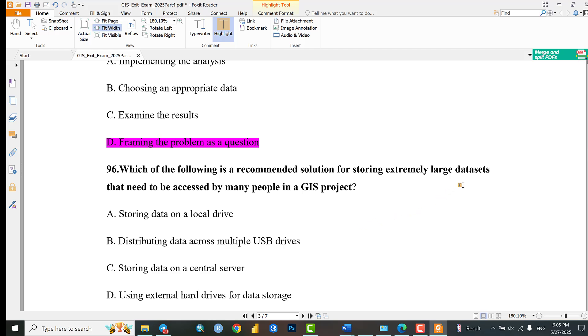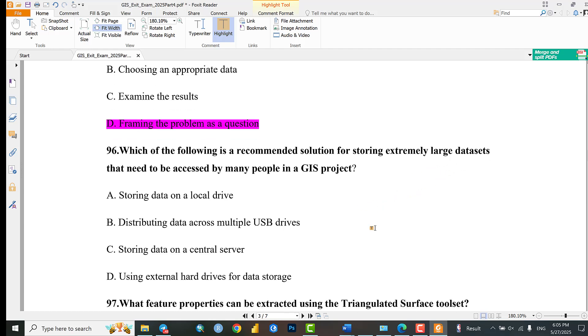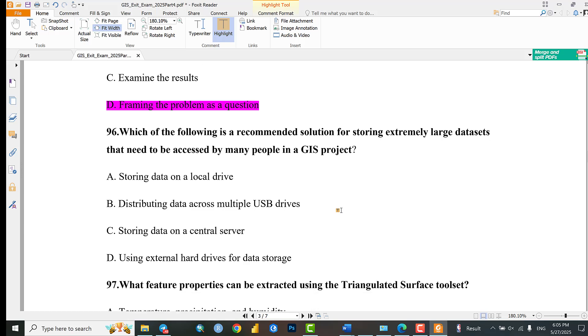Question 96: Which of the following is a common solution for storing extremely large datasets that need to be accessed by many people in a GIS project? A: Storing data on a local drive, B: Distributing data across multiple USB drives, C: Storing data on a central server, D: Using external hard drives. The answer is storing data on a central server.